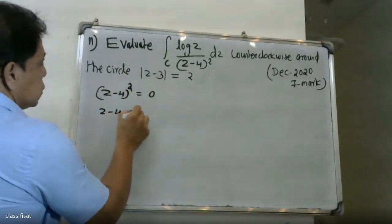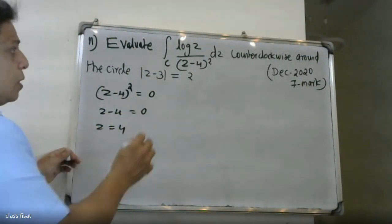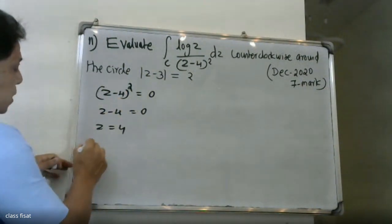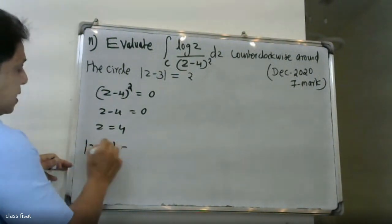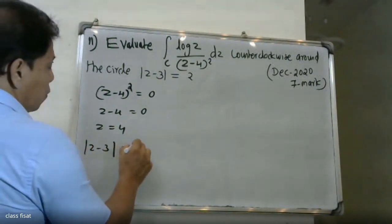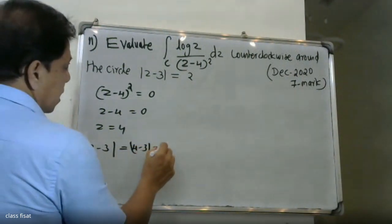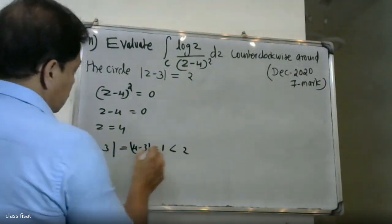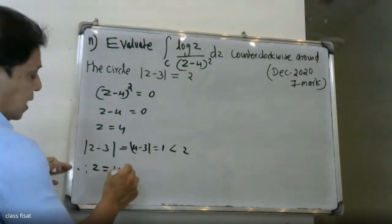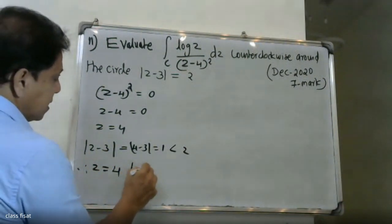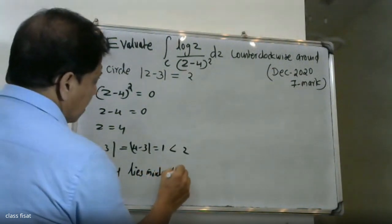Therefore z equals 4 is the singularity. Now check: on the circle, modulus of z minus 3 equals 2. At z equals 4, modulus of 4 minus 3 equals 1, which is less than 2. Therefore z equals 4 lies inside the circle, meaning the singularity lies inside the circle.